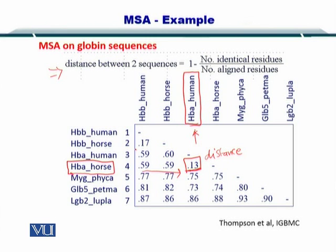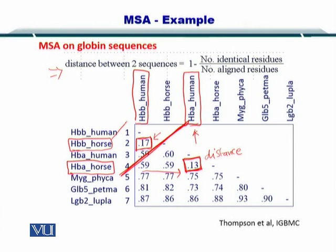HBB horse is also not very far from HBB human, as shown by a distance of 0.17. However, 0.13 is smaller, so HBA horse and HBA human are much more similar, while HBB horse and HBB human are a little less similar to each other. In this way, all of the distances listed in this distance matrix describe the difference between the corresponding sequences.